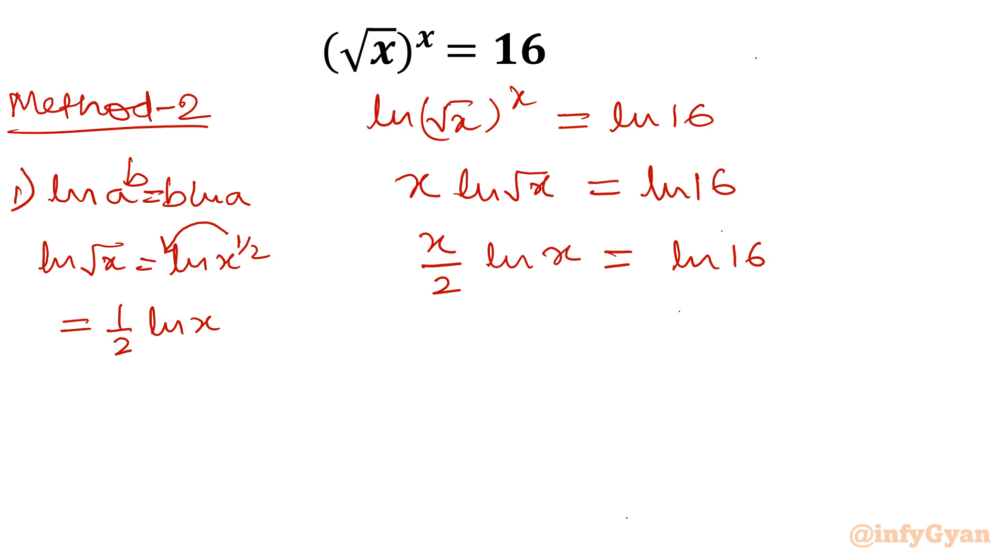Now I can write 16 as 4 square. So let me write this one as 4 square. Again same property, this will come down as 2 ln 4. And your left side is x over 2 ln x. Now this 2 we will take towards right, so it will give us x ln x equal to 4 ln 4.